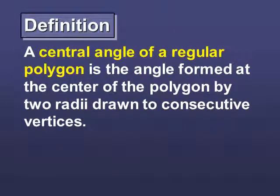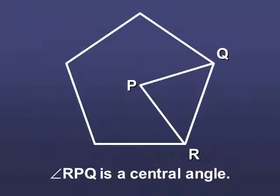A central angle of a regular polygon is the angle that's formed at the center of the polygon with two radii drawn on consecutive vertices. So, here's a picture of a central angle.